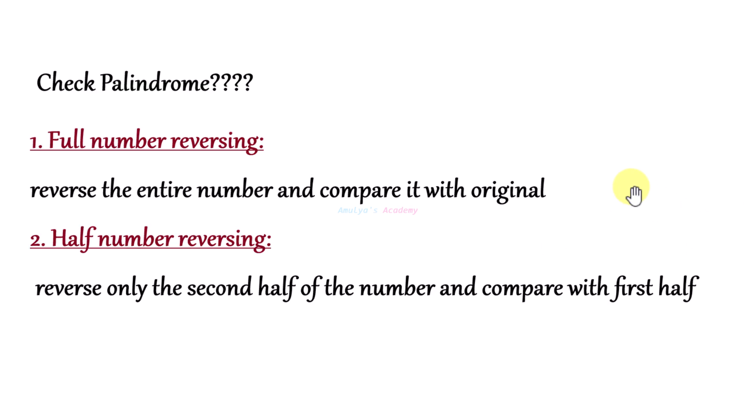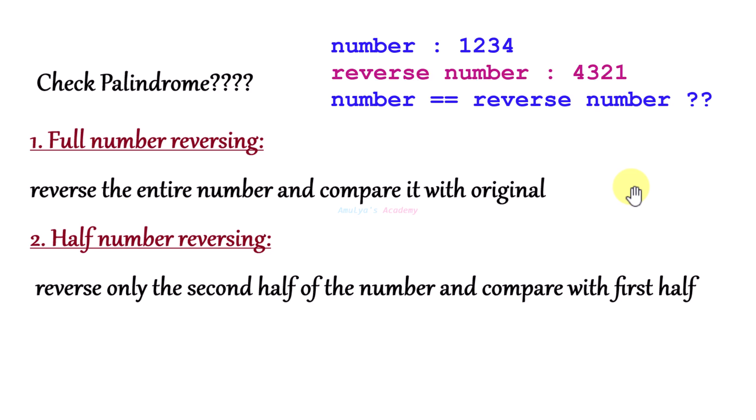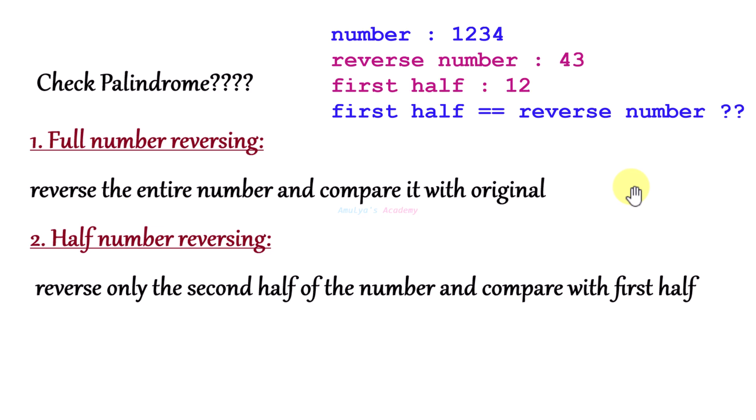Next, let's talk about how to write the program. To check whether a number is a palindrome, you can use two approaches. The first one is full number reversing — reverse the entire number and compare it with the original. The second method is half number reversing — reverse only the second half of the number and compare it with the first half.